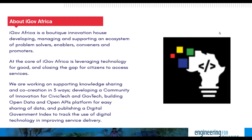Just a little bit about iGov Africa. We are a boutique innovation house, essentially bringing together the innovation ecosystem — whether you're talking about problem solvers, enablers, conveners, and promoters — to address real social issues leveraging technology. We try to close the gap for citizens to access services, not just from government but also from development partners. We support knowledge sharing and co-creation in three ways: we develop a community of innovation for civic tech and gov tech; we're building an open data and open APIs platform; and this year we'll publish a digital government index to track the use of digital technology in improving governance.